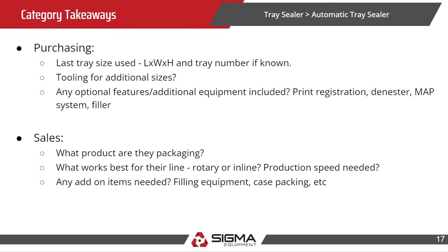For purchasing, we want to know the last tray size used — the length, width, and height — and if you know the tray number that's important. The number three tray is what we typically find; those are the most common. We also need to know if there's additional tooling and any other options like print registration or the MAP system.